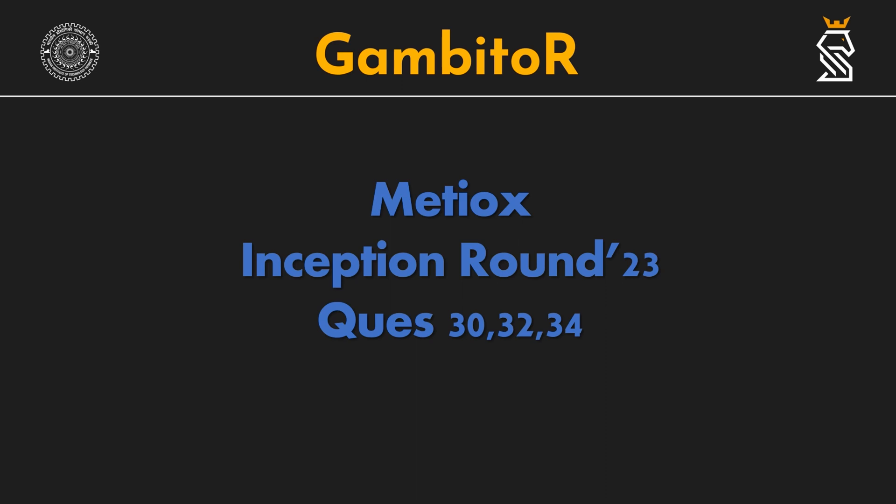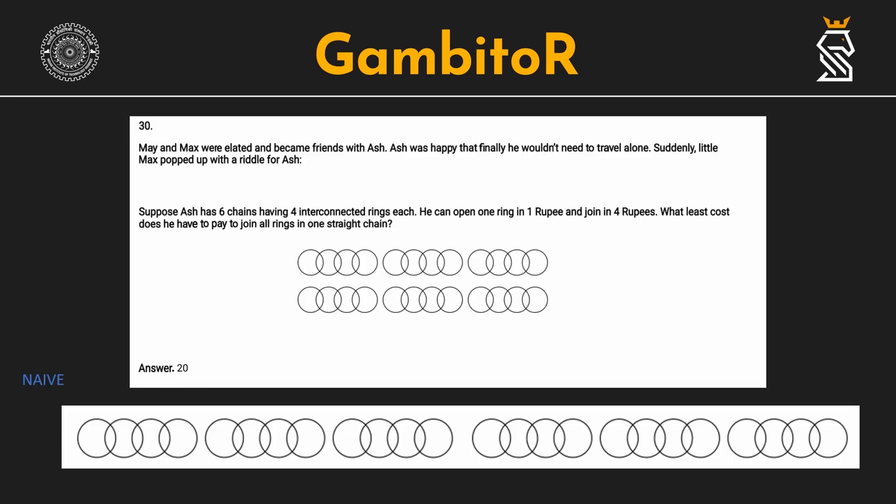Moving on to the 30th question, we have to find the least cost it will take to form a single long chain out of 6 chains of 4 rings each. The chain that would be formed would have 6 times 4, 24 rings. So, how can we do that?